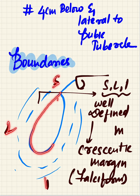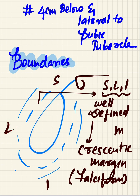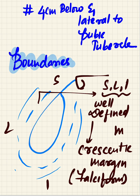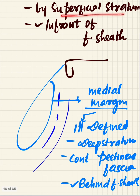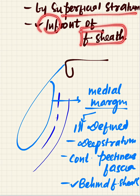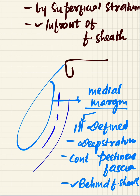The lateral margin is well defined, giving it a crescent-shaped or half-moon shape, also called the falciform margin. This is a well-defined margin, hence called the crescent or falciform margin. It is made up of the superficial stratum and is present in front of the femoral sheath.